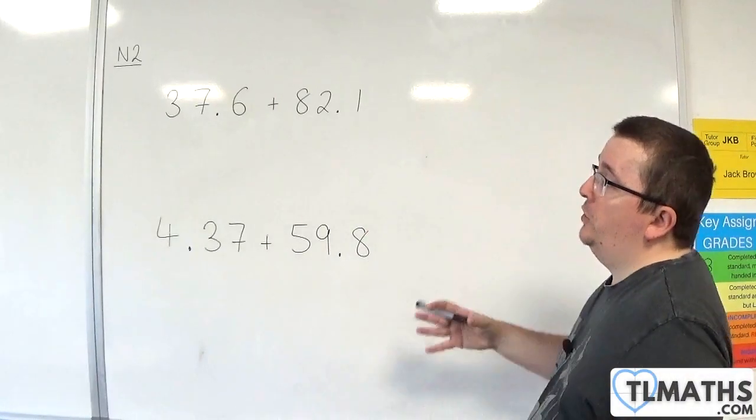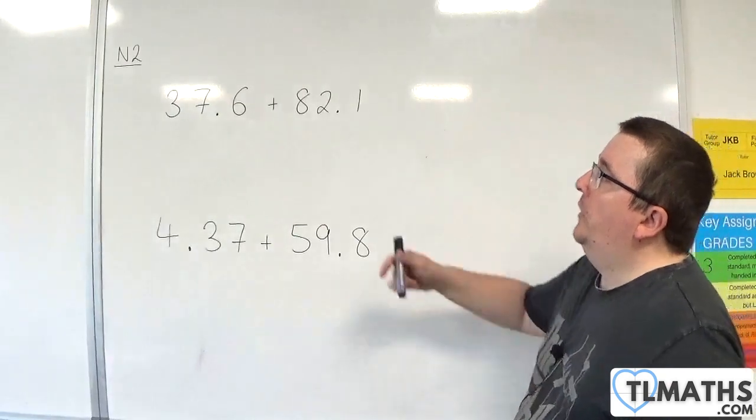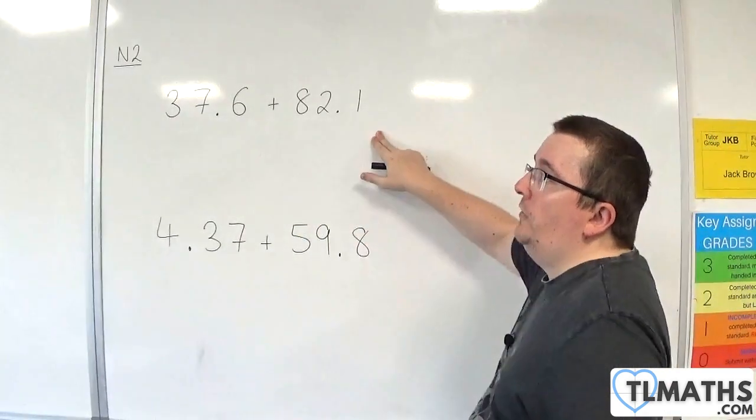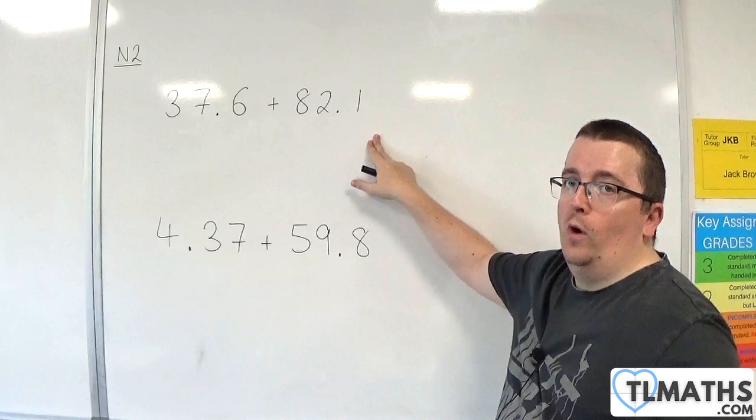So let's see how we deal with addition with decimals. I'm going to go through this example first: 37.6 plus 82.1.